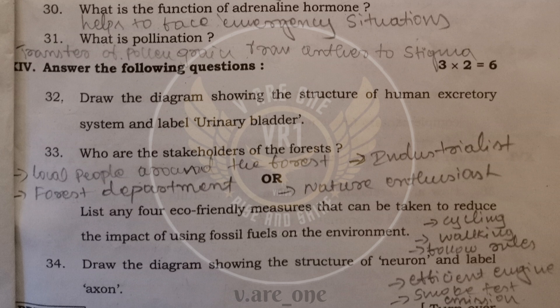List any eco-friendly lab measures that can be taken to reduce the impact of using fossil fuels in the environment. We can use cycling, walking, and following the rules, traffic rules. And we can use efficient engine. And we have to follow, do the emission test periodically.